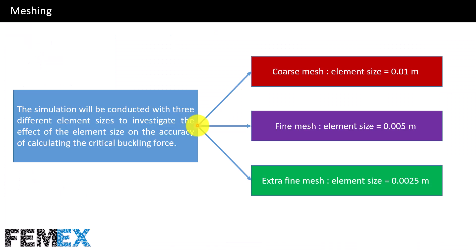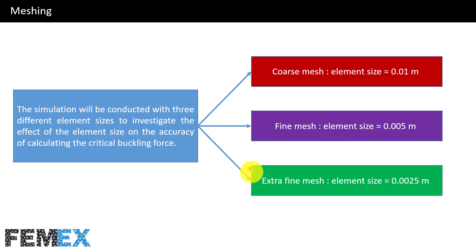Now I want to talk about meshing. The simulation will be conducted with three different element sizes to investigate the effect of element size on the accuracy of calculating the critical buckling force. For the coarse mesh the element size is 0.01; for the fine mesh it is 0.005; and for the extra fine mesh it is 0.0025.